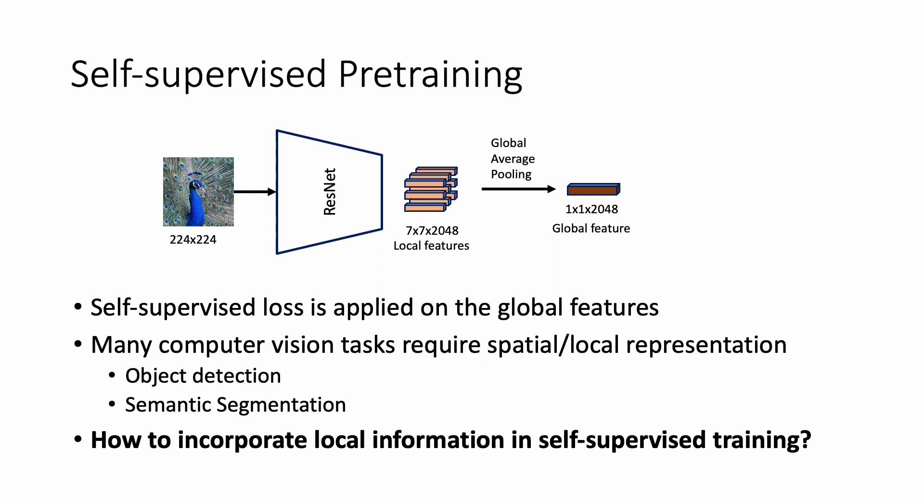One drawback of self-supervised learning is that methods mostly focus on global image representations. To clarify, let's consider the feature extraction part. Given an image of 224×224 dimensions, it is fed into a deep learning network like ResNet, which down-samples the image into a 7×7 spatial map where each location is a 2048-dimensional feature vector. Then global average pooling is applied, which averages out the spatial features into one global feature.